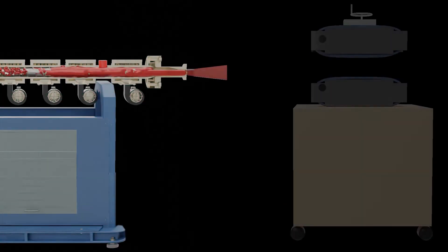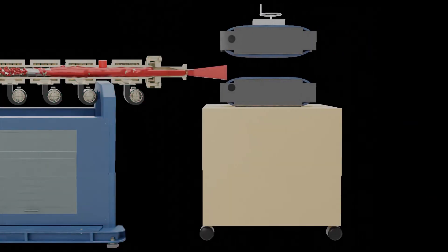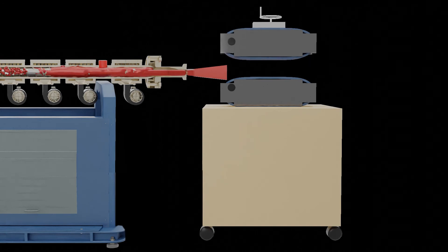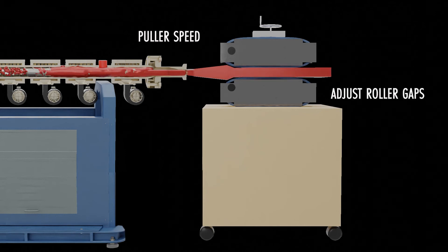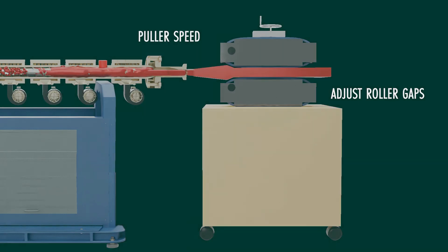Finally, we want to be sure to compensate for the expansion of the foam on all downstream equipment. For example, you'll need to make an adjustment on your puller speed in extrusion profile applications, while you'll need to adjust the die or roller gaps in sheet extrusion applications.